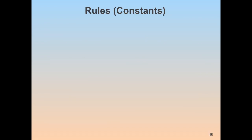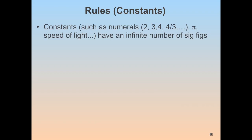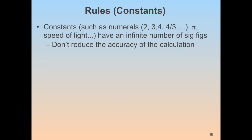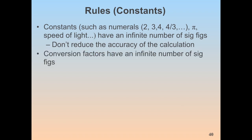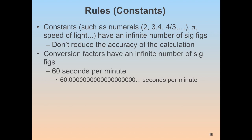If we have a constant value in the equation — like a numeral such as 2, 3, or 4, or fractions like 4/3 or 1/2, or pi, or the speed of light (which is defined to be exactly a certain value) — all of these have an infinite number of significant figures. They don't reduce the accuracy of the calculation. So for the volume of a sphere, 4/3 π r³, the 4, 3, and π have no impact on accuracy — it depends only on your measured radius.